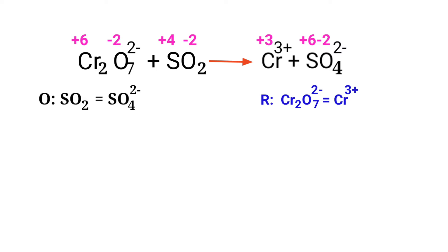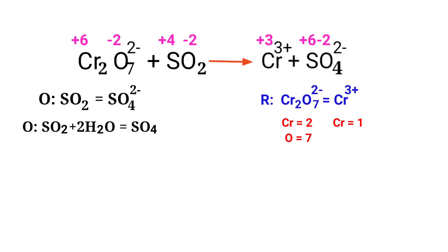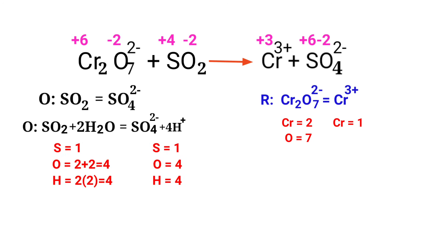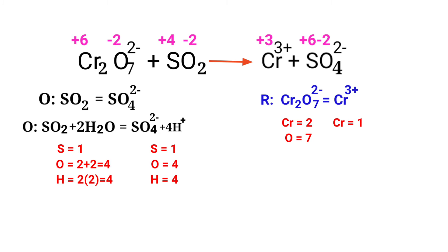Now balance the number of atoms in the two half-reactions. In the oxidation half-reaction, to balance the oxygen atoms, you can produce water molecules. The oxygen atoms are now balanced. Now we need to balance the hydrogen atoms by producing H⁺ ions. The atoms are now balanced in the oxidation half-reaction.